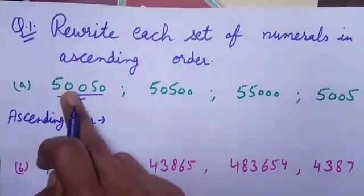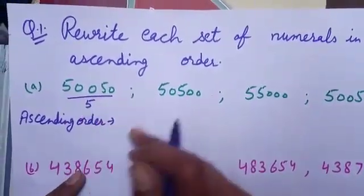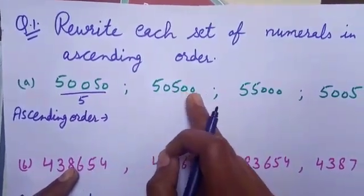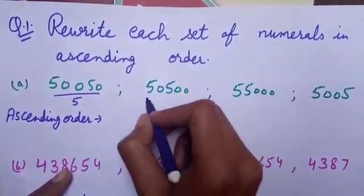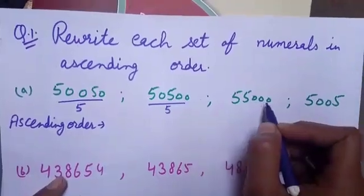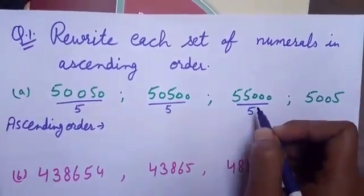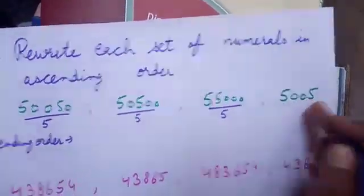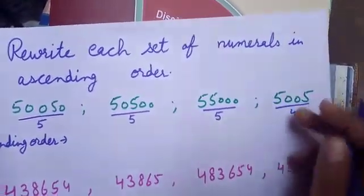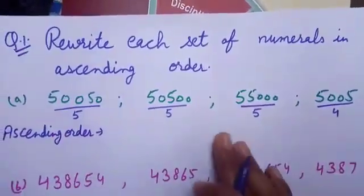The first numeral has 5 digits, the second numeral has 5 digits, the third numeral has 5 digits, and the fourth numeral has 4 digits. So the 4-digit numeral is the smallest among them.